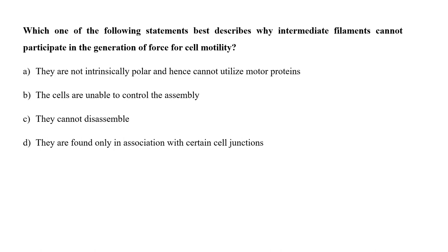Which one of the following statements best describes why intermediate filaments cannot participate in the generation of force for cell motility? A. They are not intrinsically polar and hence cannot utilize motor proteins, B. Cells are unable to control the assembly, C. They cannot disassemble, or D. They are found in association with certain cell junctions? Intermediate filaments consist of several intertwined strands of fibrous protein. Their function is purely structural — they bear tension, maintaining cell shape and anchoring the nucleus and organelles. The overall filament has no polarity, thus motor proteins cannot move along intermediate filaments. So the correct answer is option A.